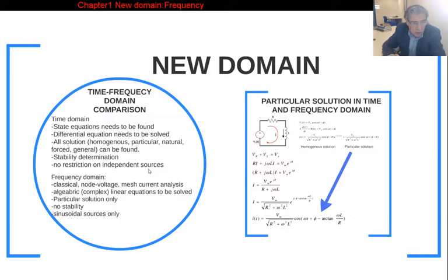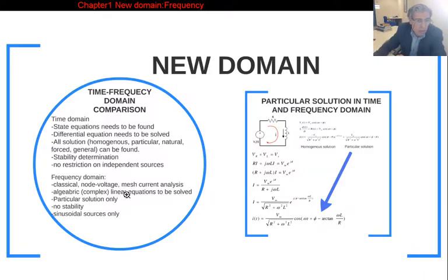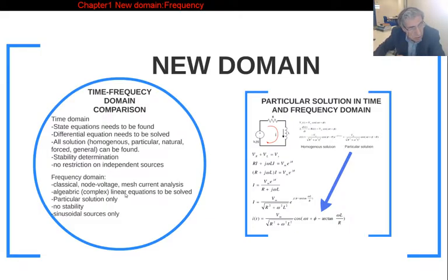In the frequency domain, we use classical node voltage and mesh current analysis. We are not going to use state equations or solve differential equations. Instead, we use the same methods as for resistive circuits — classical node voltage and mesh current analysis — and the mathematical model will be linear algebraic equations with complex coefficients in matrices.